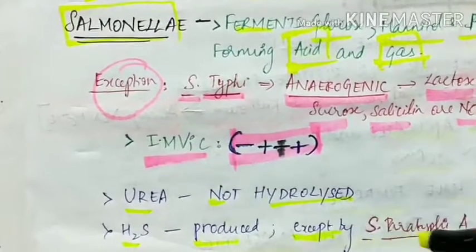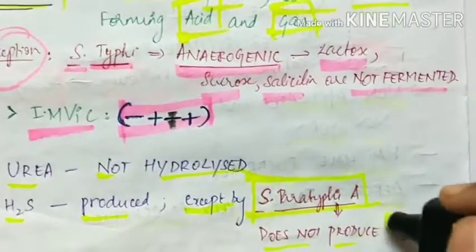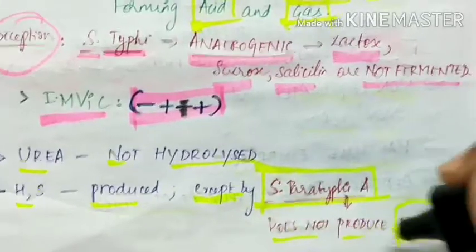Urea is not hydrolyzed and H2S is produced. Exception for this is Salmonella paratyphi A, which does not produce H2S. Salmonella paratyphi A does not produce H2S, and the other species produce hydrogen sulfide gas.